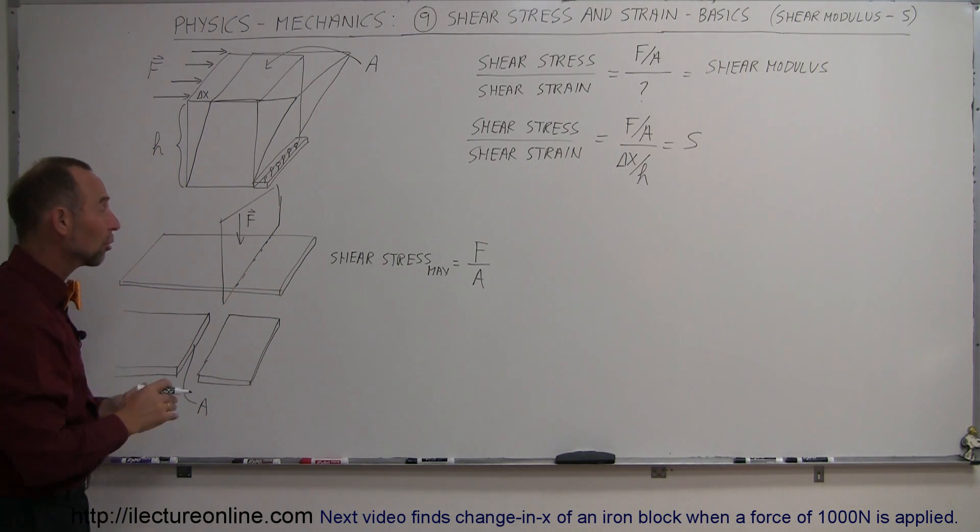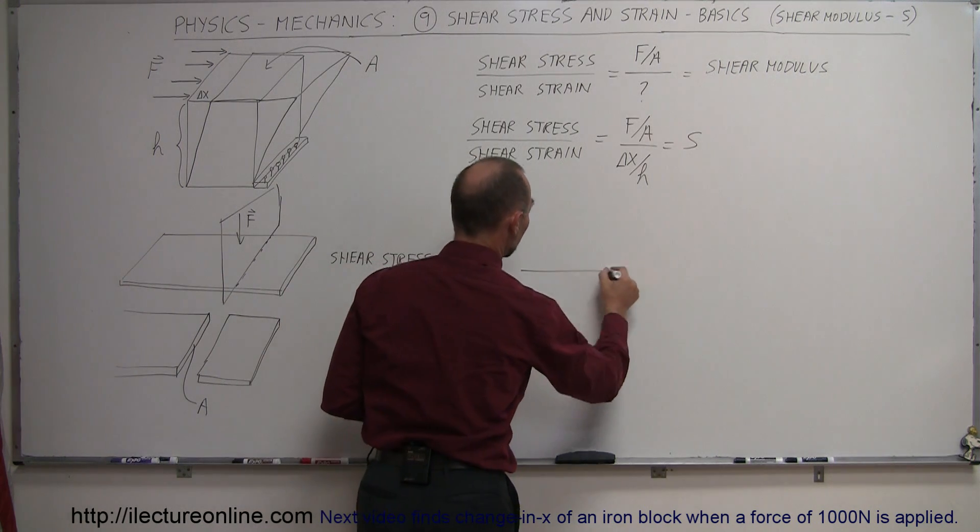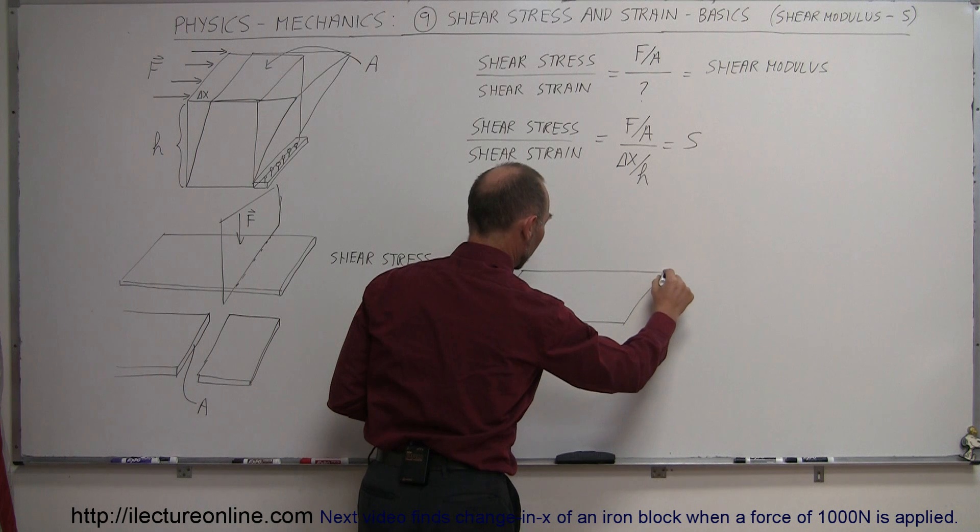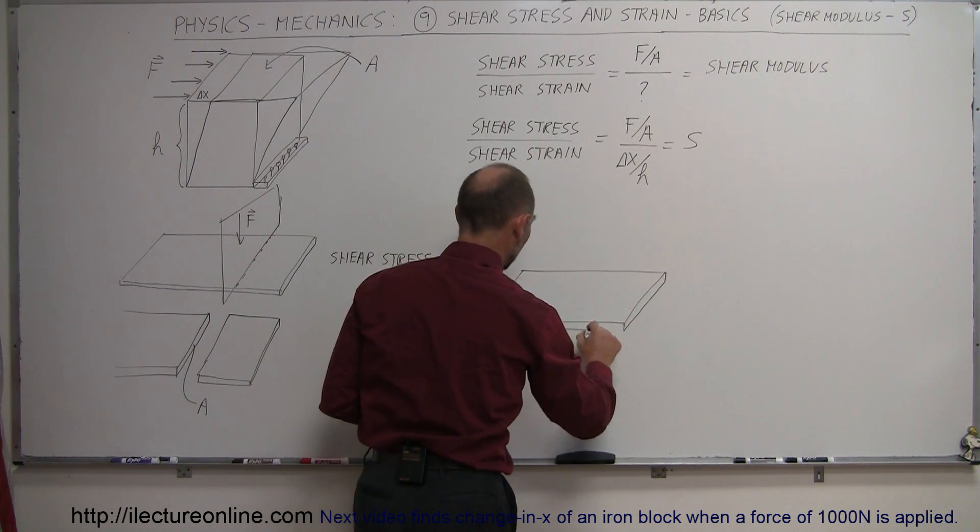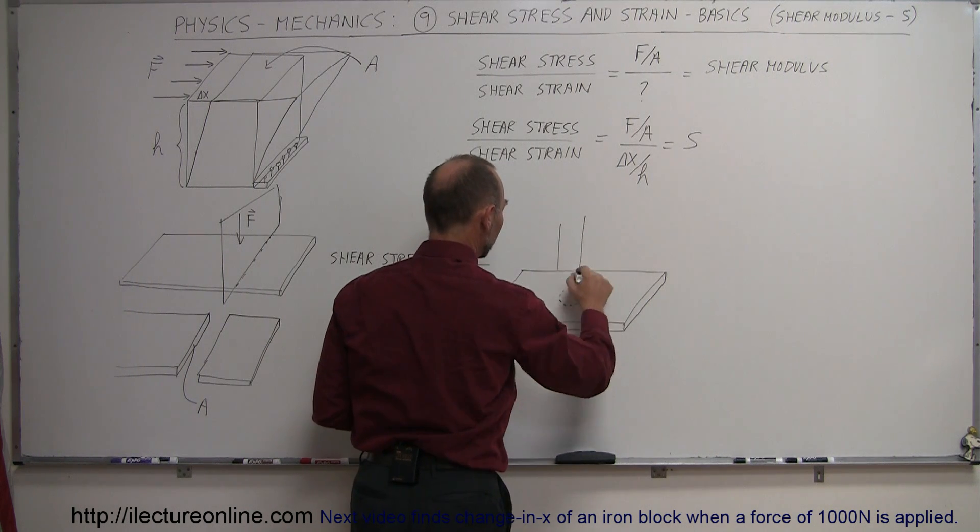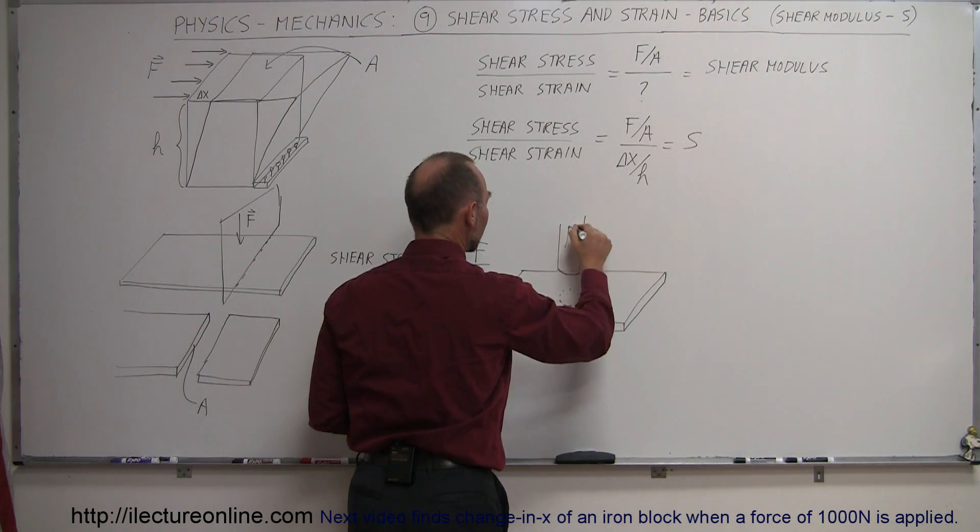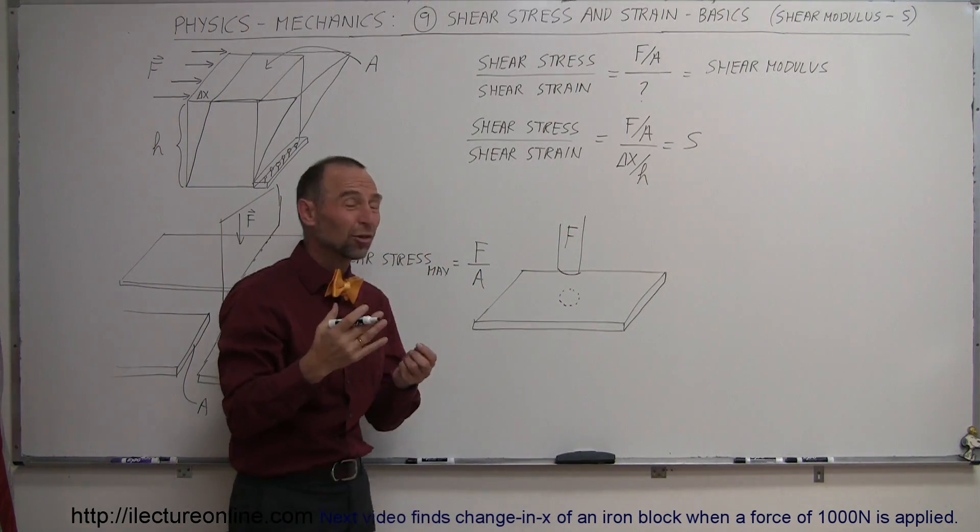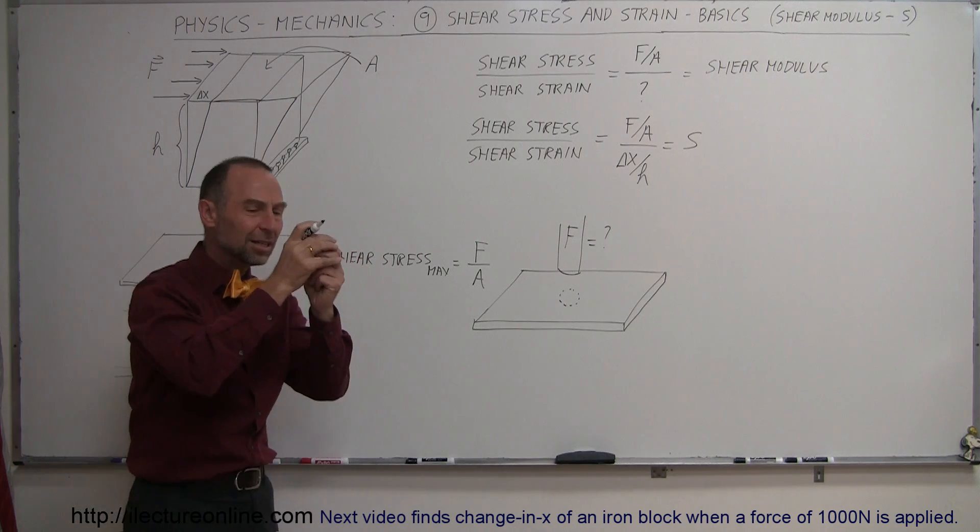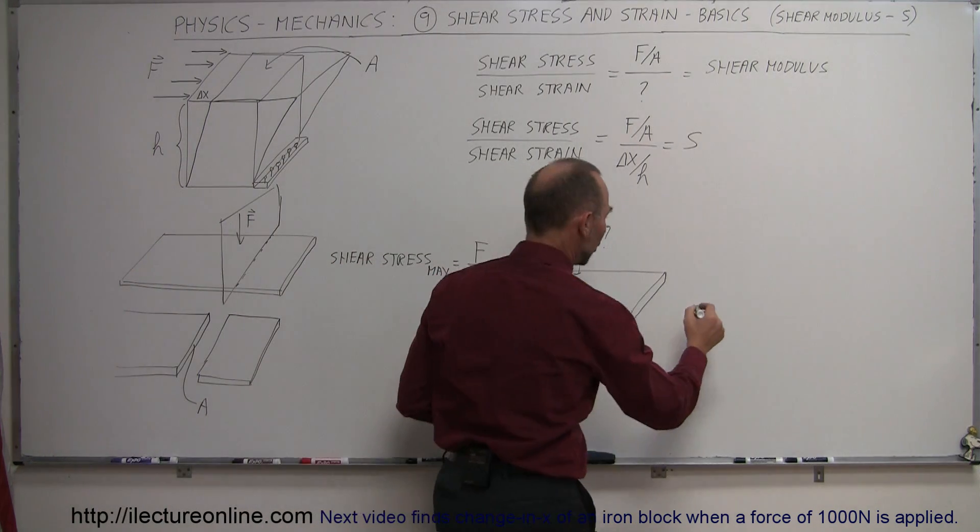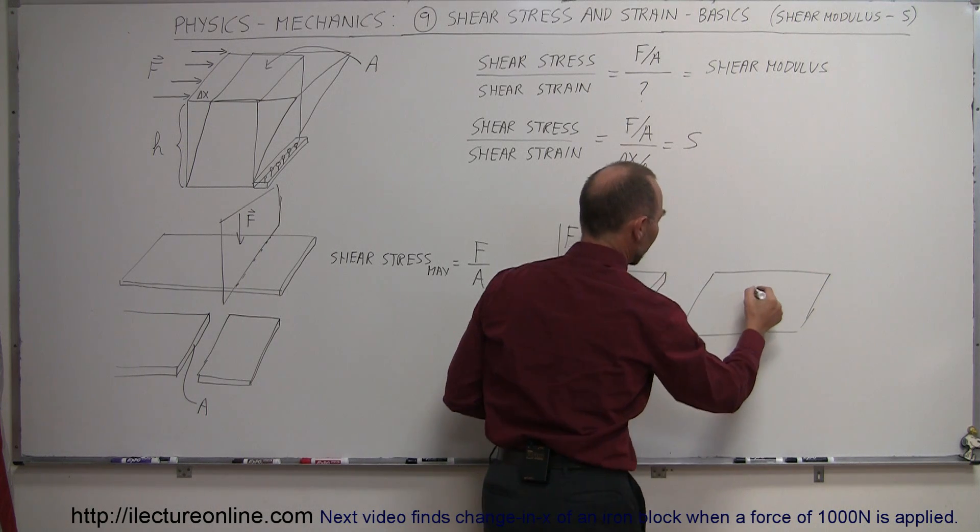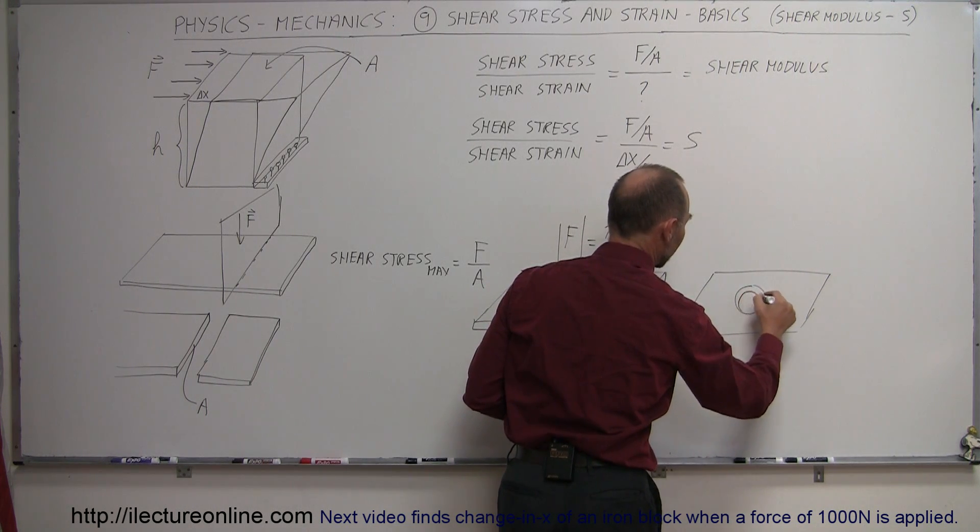Another application in industry where this is important is when you try to punch out a hole out of the material. Let's say you have a metal sheet, and you want to punch a hole in it. You come with a big punch, and you come down, you apply a certain amount of force, and the question is, how much force does that require in order to punch out that material? Well, when you see the piece that was punched out, you're left with a hole. So let's draw this again over here.